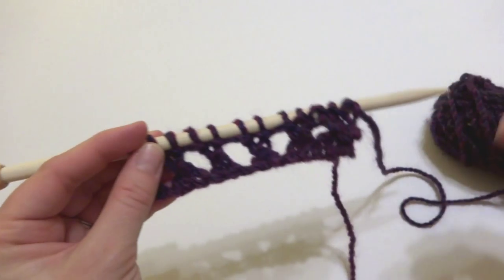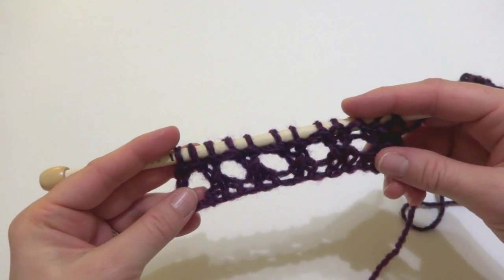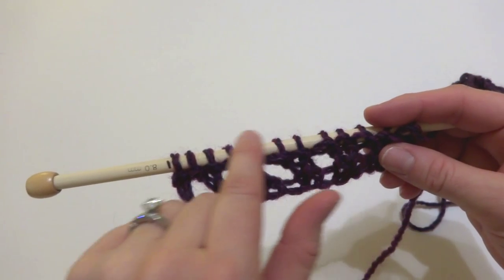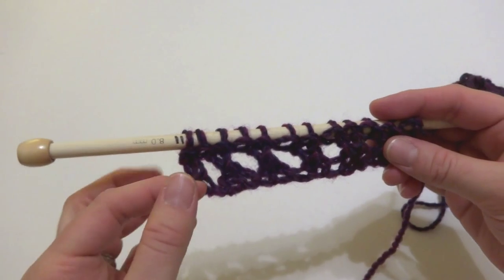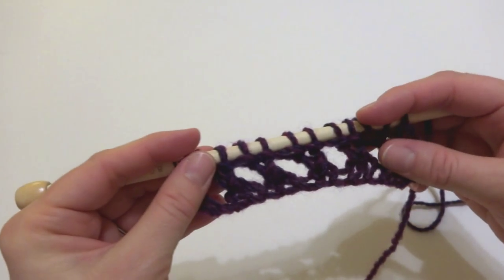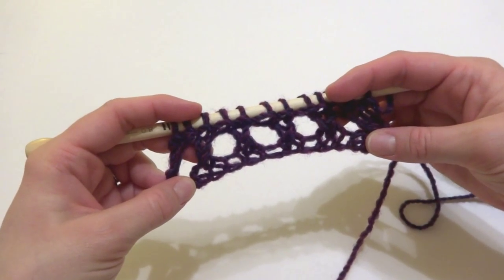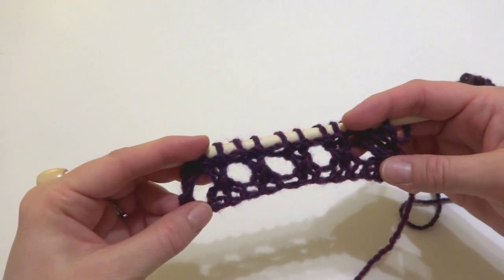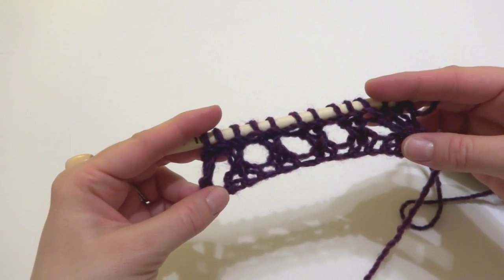And by doing an increase, the yarn over, and then a decrease right next to it, you're not changing your stitch count, but you're creating this pretty eyelet row. So that is one way to easily create eyelets in your work.